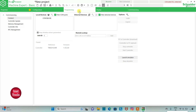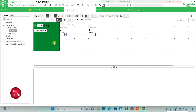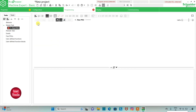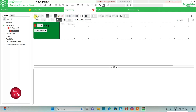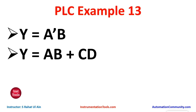I will go to the Programming tab, delete this rung, and add a new rung. Here I will be drawing the ladder diagram for the next example: Y equals AB plus CD. There is an AND gate with A and B, an AND gate with C and D, and then an OR gate combining AB and CD.